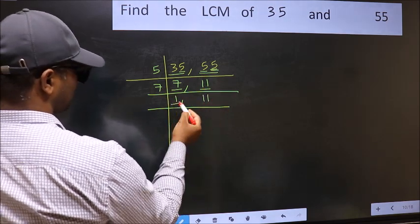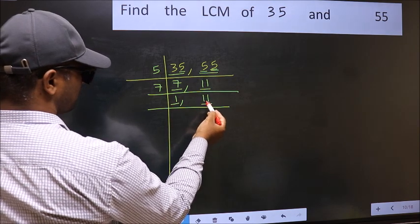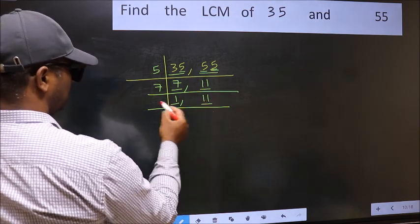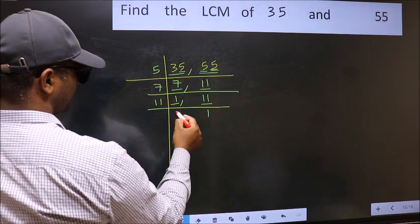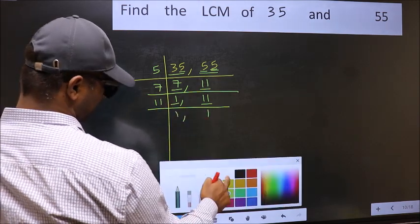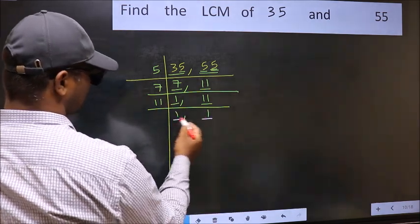Now we got 1 here, so focus on the next number 11. 11 is a prime number, so 11 times 1 is 11. So we got 1 in both the places.